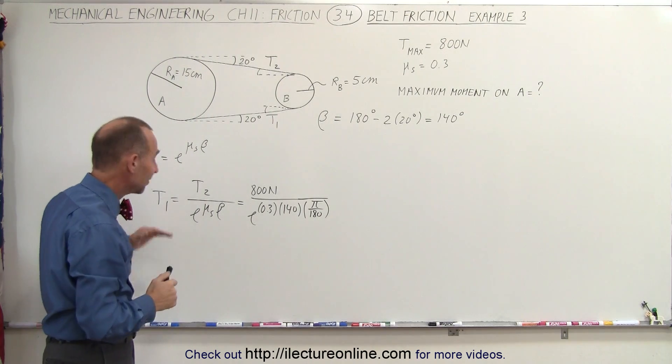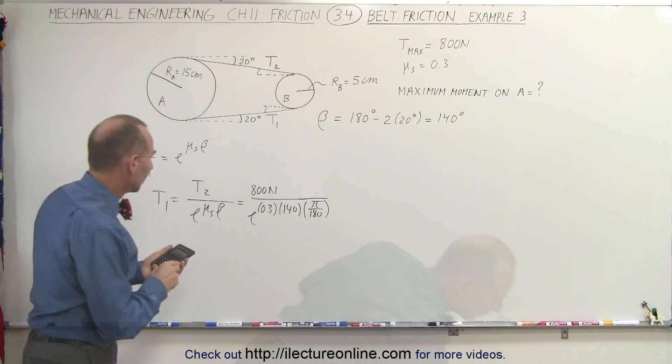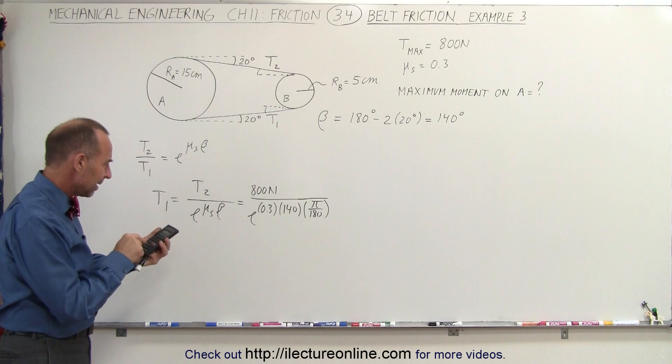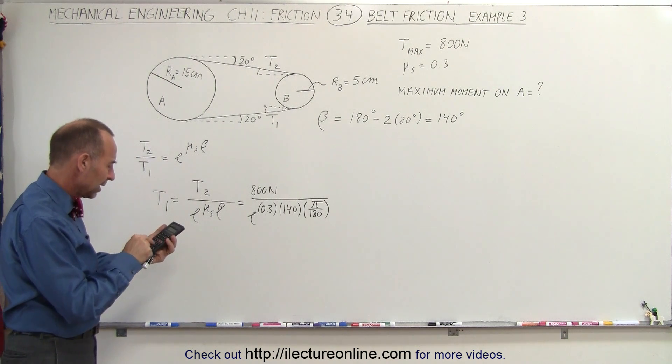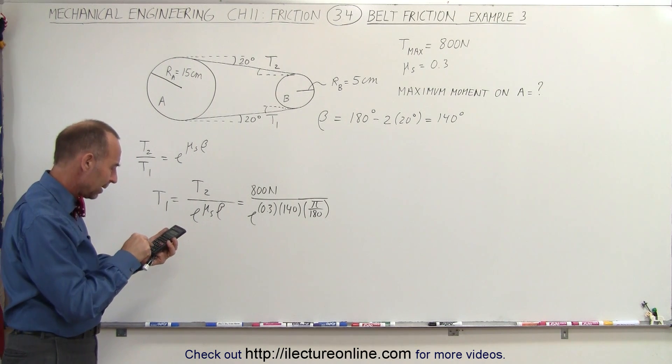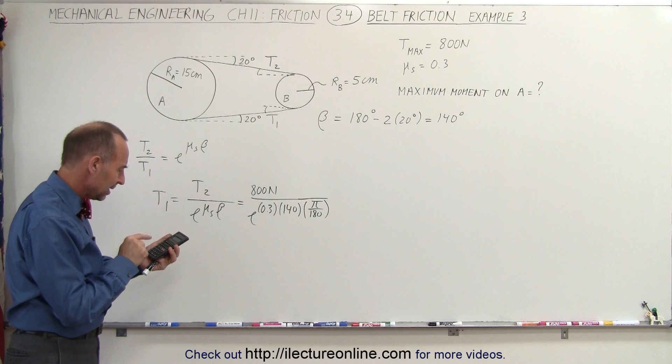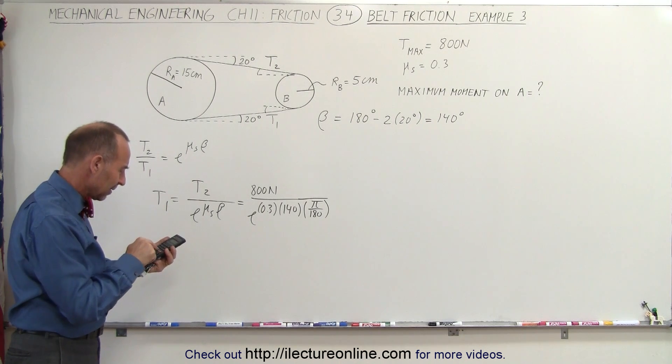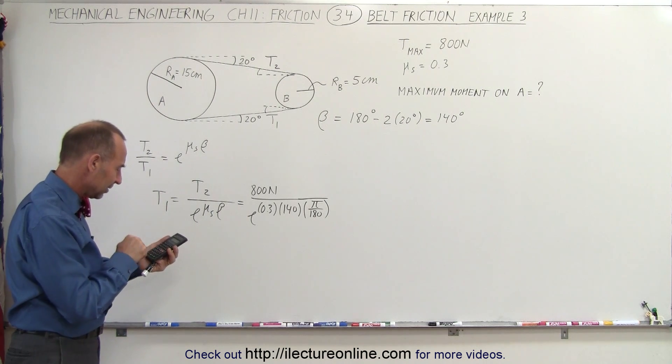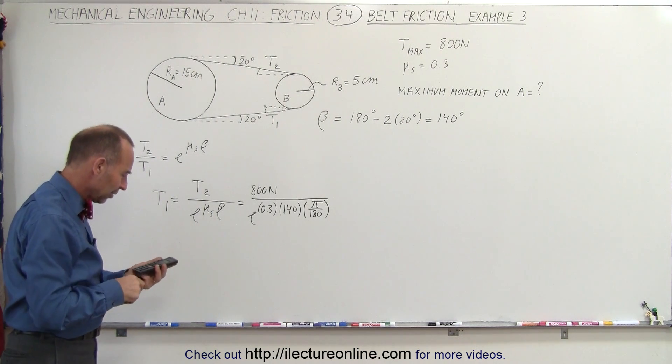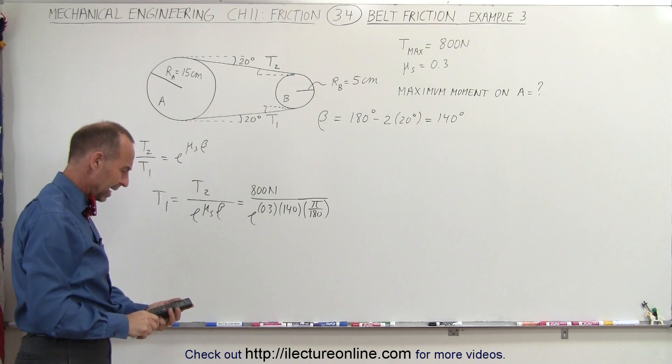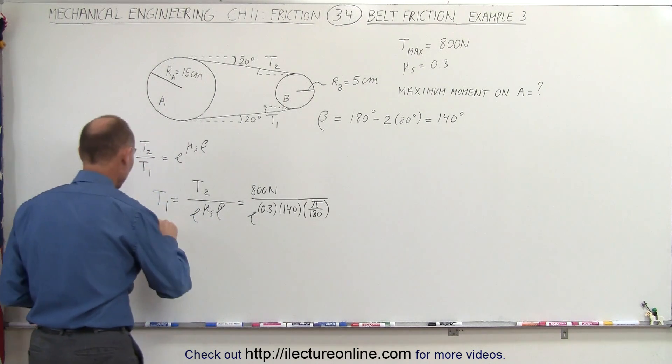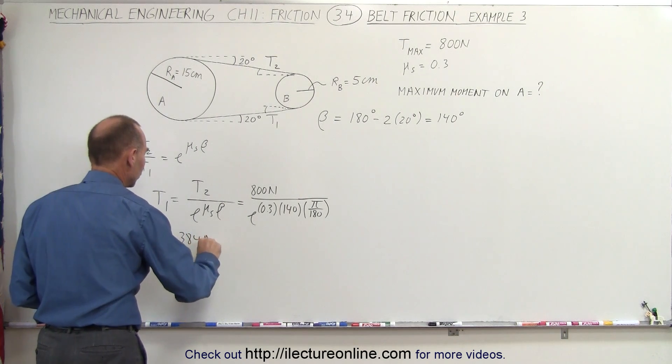Alright, now we're ready to find T1. So we have 0.3 times 140 times pi divided by 180, and that becomes the exponent of E to the x, take the inverse of that, times 800 equals 384 newtons. So T1 is equal to 384 newtons.